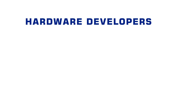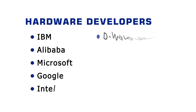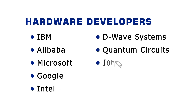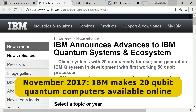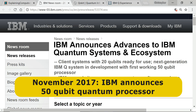Companies developing quantum computers include IBM, Alibaba, Microsoft, Google, Intel, D-Wave Systems, Quantum Circuits, IQM, and Rigetti. Many of these firms work in conjunction with major university research teams. In November 2017, IBM reported making 20-qubit quantum computers available to client users of its cloud-based service IBM Q, and announced the construction of a prototype 50-qubit quantum processor — a very major upgrade from its previous 20-qubit model.